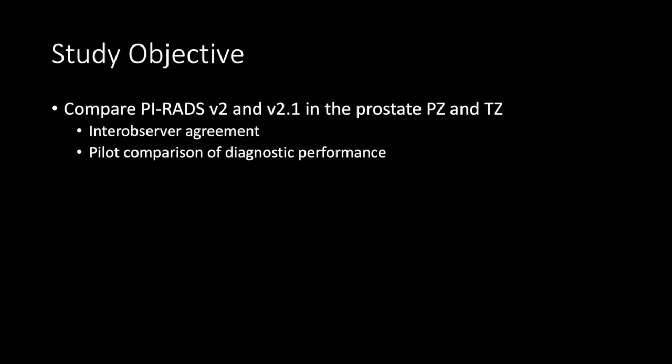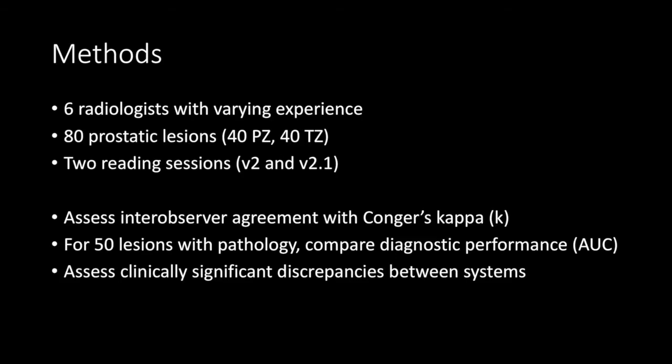With these changes in mind, we wanted to see how version 2.1 performed in comparison to version 2 in both TZ and PZ lesions, which would give us insight into how each of these changes affects interpretation. We had six radiologists look at 80 lesions on fully scrollable MRI studies, including 40 TZ and 40 PZ lesions, spanning PI-RADS category 2–5 lesions in each zone based on the initial reports. All six radiologists read all 80 cases once with version 2 rules and again with version 2.1 rules a month later, allowing direct comparison of inter-observer agreement and, for those with pathology, a pilot performance comparison using area under the curve.